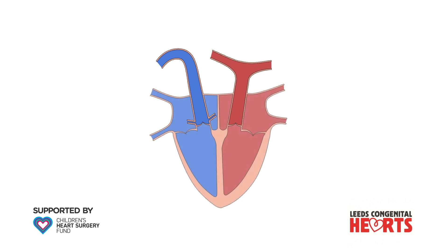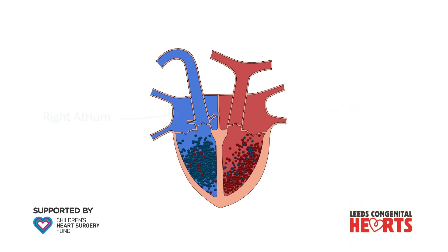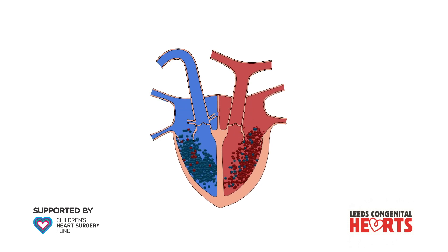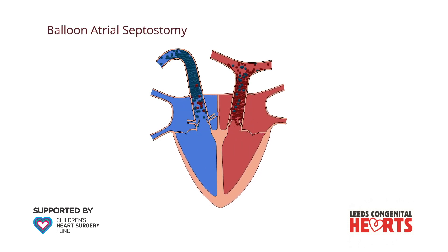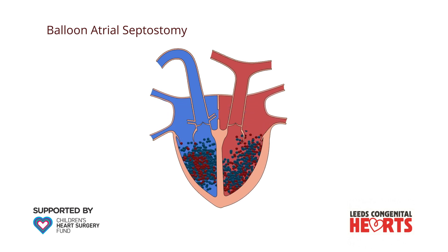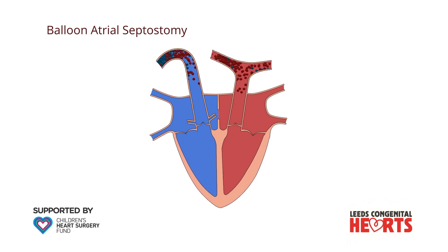The immediate priority is to ensure that at least some oxygenated blood can get to the body. When a baby is born, there is a natural hole called a patent foramen ovale between the two collecting chambers of the heart, the right atrium and the left atrium. Often this hole is not wide enough, so a procedure called a balloon atrial septostomy is performed. A tube is inserted through a vein in the groin into the right atrium and across into the left atrium. Once in the left atrium, a balloon is inflated and pulled back into the right atrium. This enlarges the hole between the right and left atrium and so allows for more oxygenated blood to be pumped around the body.